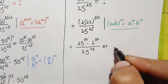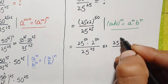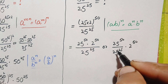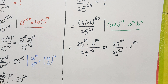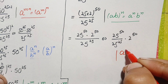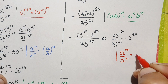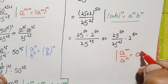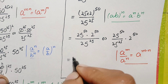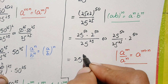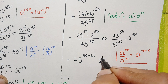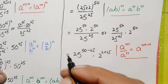So we have 25 raised to power 50 times 2 raised to power 50, divided by 25 raised to power 25. The numerator and denominator share the same base 25, so we use the same-base division identity: a raised to power m divided by a raised to power n equals a raised to power m minus n. This gives 25 raised to power 50 minus 25, times 2 raised to power 50.